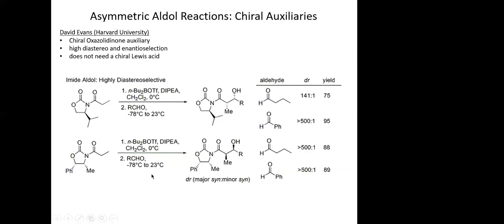When you add the aldehyde you do have to cool to minus 78, because the lower the temperature, the more selective the reaction is going to be — at higher temperature there's more energy and access to more mechanistic pathways. You cool to minus 78, syringe in your aldehyde, and let it warm to room temperature. You see again greater than 500:1 syn-to-anti, with 88 and 89 percent yields in both cases.